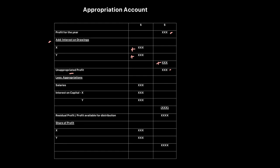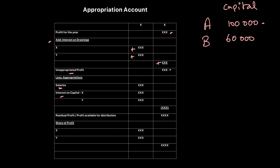To distribute profits, we start with appropriations. First, salaries are paid to partners involved in management. Then partners are paid interest on capital for their capital contribution. For example, if partner A has invested $100,000 and partner B has invested $60,000, A should be compensated for investing a higher amount. At a ten percent interest on capital rate, A gets $10,000 and B gets $6,000, so both are compensated proportionally.